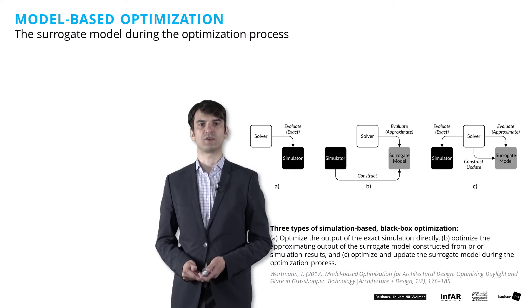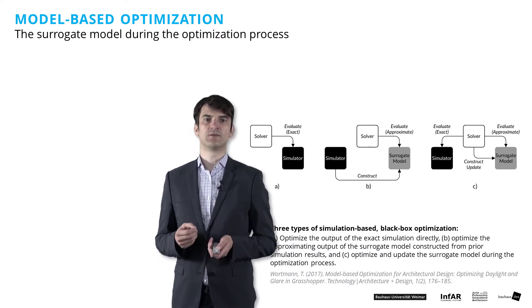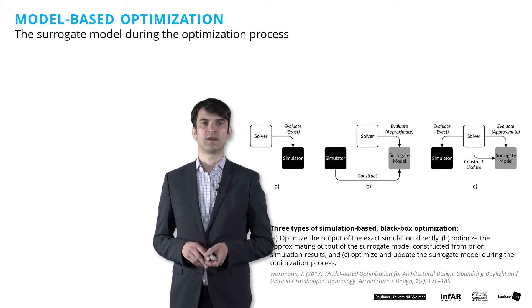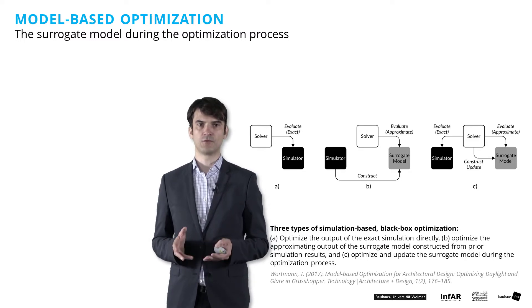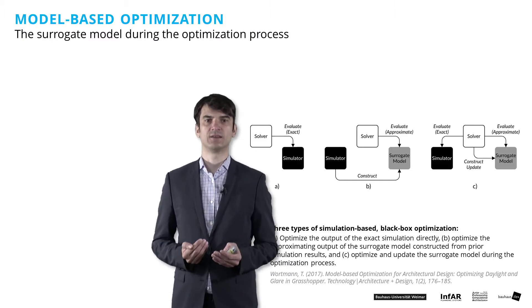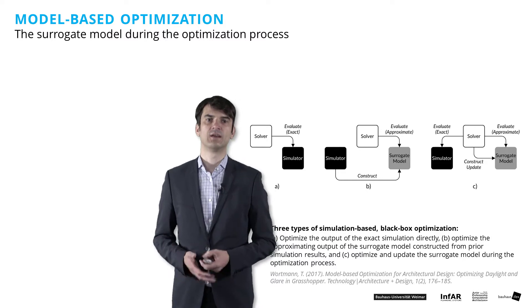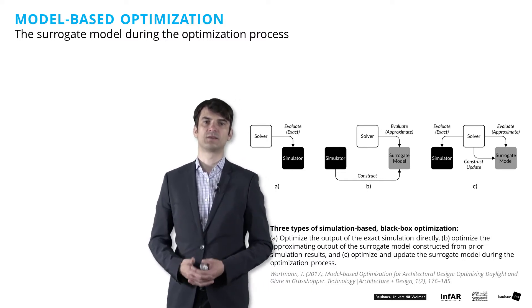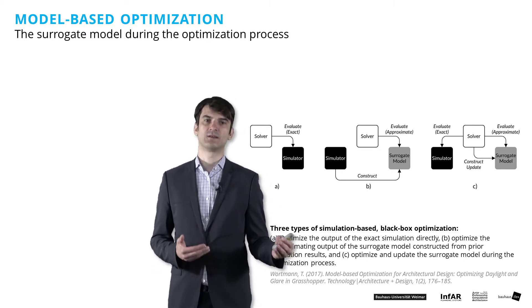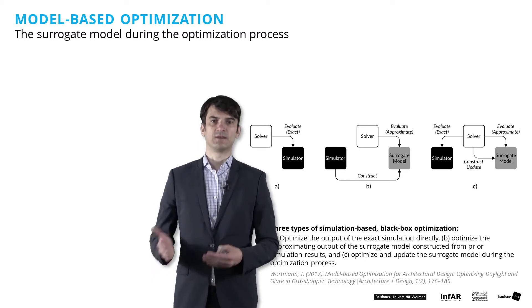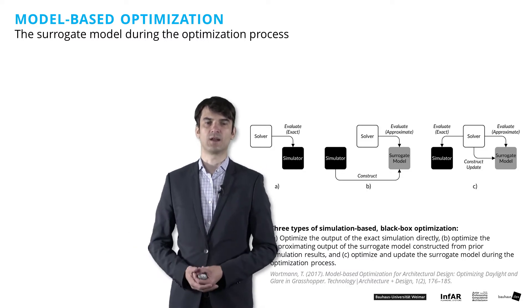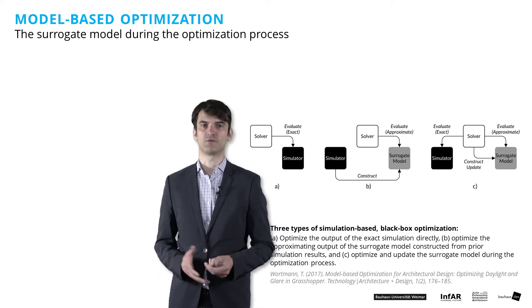Accuracy is a concern especially for approaches that completely replace time-intensive simulations with surrogate models. Improving the model's accuracy requires a large sample size, which can negate the initial speed advantage. So in the end, it's about the settings of your model-based optimization algorithm that determines whether it's really faster than the evolutionary algorithm. If the results are not precise enough, you may have to change the parameters.